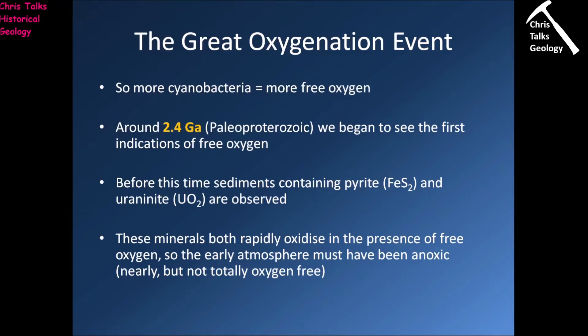However, as we move into the Proterozoic, one of the first things we see is pyrite and uraninite disappearing from these clastic sediments. This tells us the amount of atmospheric oxygen is clearly on the increase. We're transitioning essentially from the oxygen-poor, anoxic environment of the Archean into the more oxygen-rich, oxidizing environment of the Proterozoic.